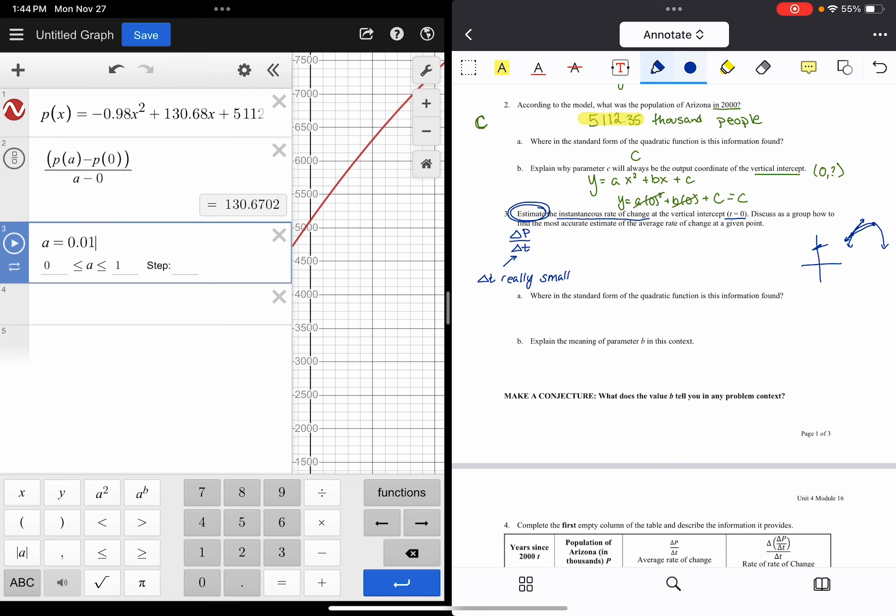So notice like now I'm at 0.02, so I'm getting a little closer. I'm actually going to switch to typing. 130.67 when I have a hundredth as my difference. What if I make it a little smaller? Now I'm at 130.679, or I could even make it smaller. You know, and I can sort of see now as I make my interval smaller and smaller. So this is the change in t interval right here. That's what a is representing. I can start to see that it's going to round to 130.68 thousand people per year.